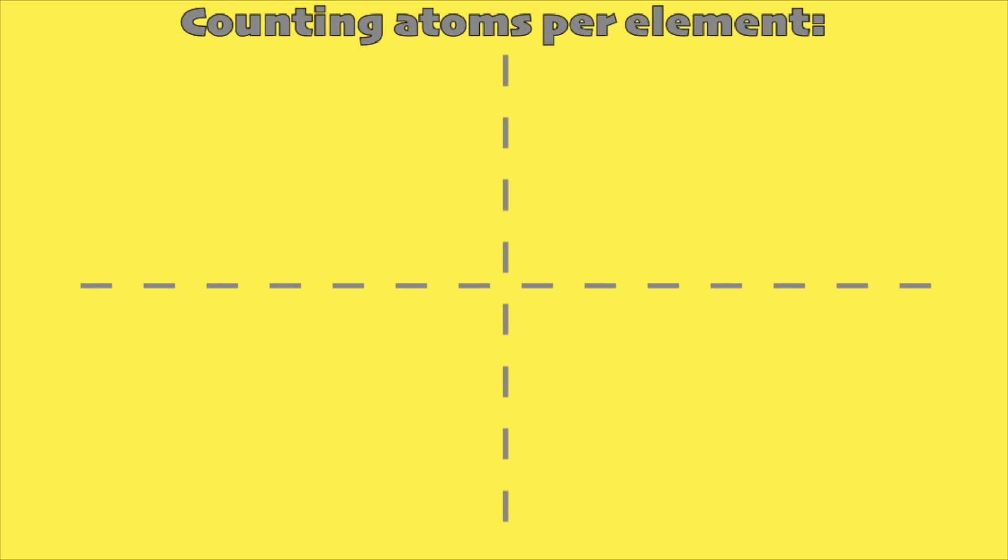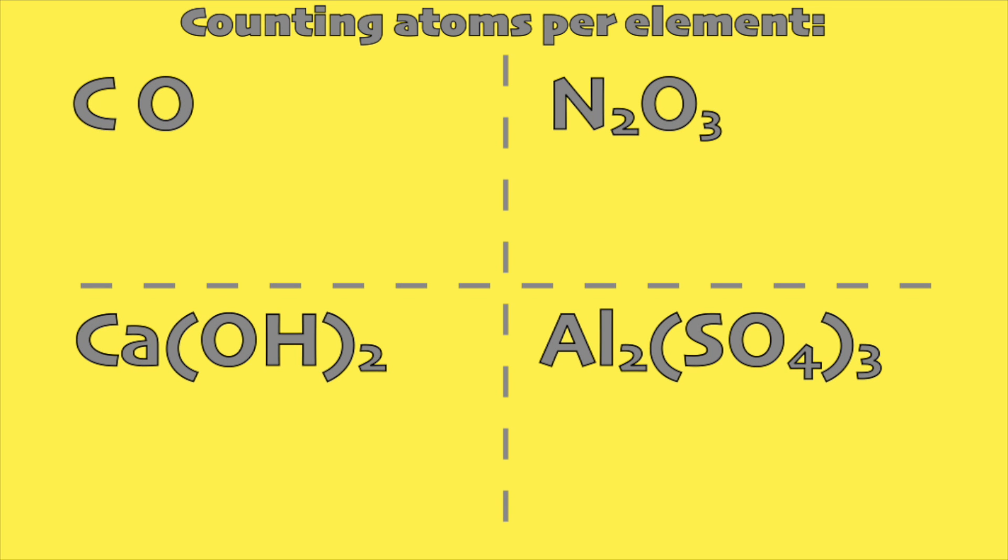The important thing in getting the molar mass is being able to count how many atoms are present per element in a specific compound. Let's have these four compounds as examples. In the first example, if there is no subscript, it is automatically one so both carbon and oxygen has one atom. In the second example, it is obvious that we have two nitrogen and three oxygen from the subscripts.